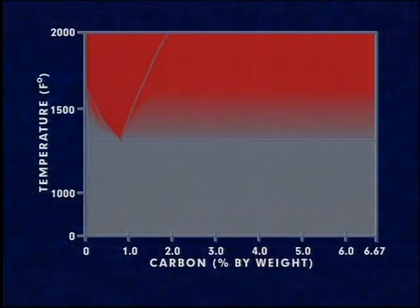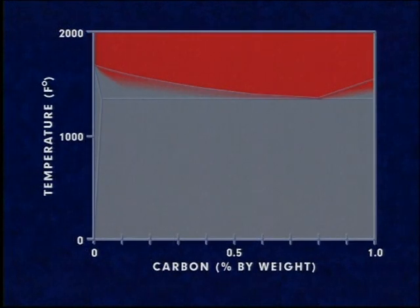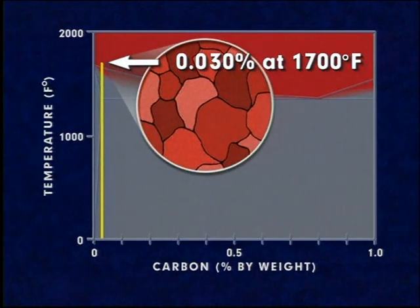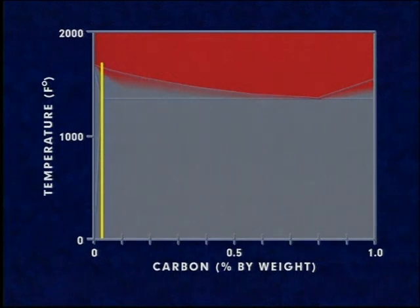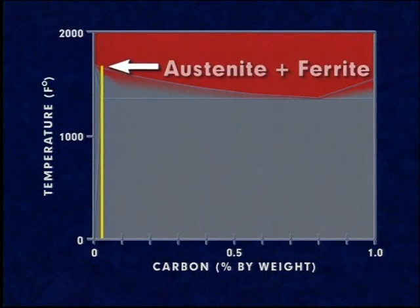Let's take a closer look at some examples of how carbon affects the hardness of steels. If steel containing 0.030 percent carbon is heated to about 1,700 degrees Fahrenheit, the structure will consist entirely of austenite. If it is then cooled slowly at about 1,650 degrees Fahrenheit, the austenite begins to transform to ferrite.